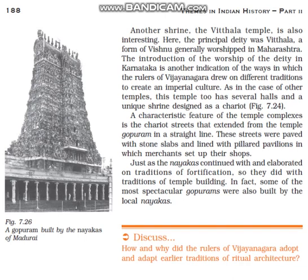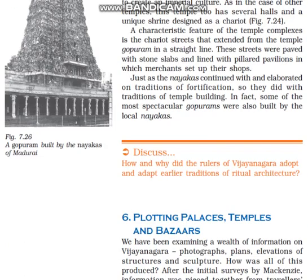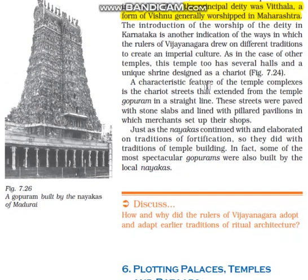In the introduction, write about Vithal: 'In the Vithal Temple, the principal deity was Vithal, a form of Vishnu generally worshipped in Maharashtra.' This will be a small introduction. Then the first point: 'This temple has several halls and a unique shrine designated as a chariot.'